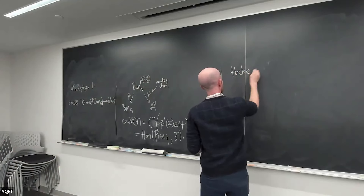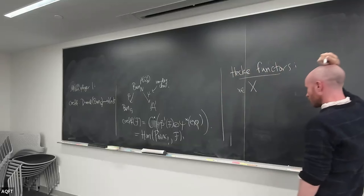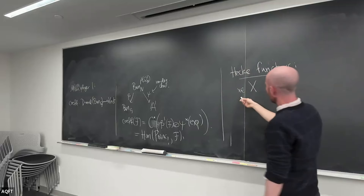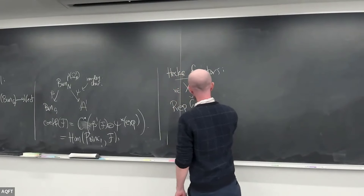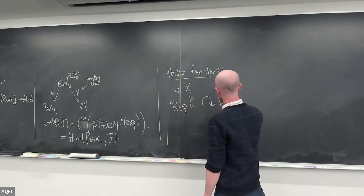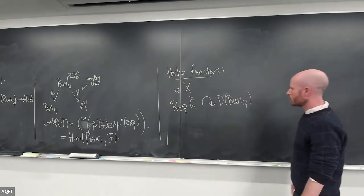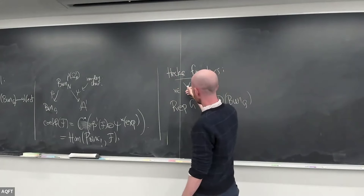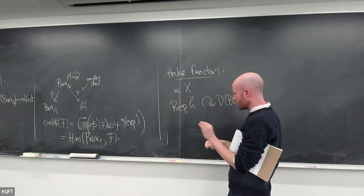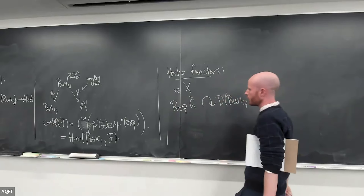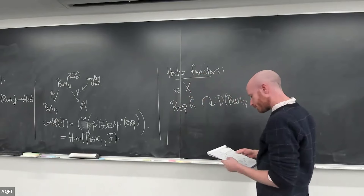Next, I briefly want to talk about Hecke functors. The nice thing is that whenever I have a point in my curve, there's an action coming from the geometric Satake theorem of representations of the Langlands dual group on this category of D-modules on Bun_G. If I take two points, I'll get an action of Rep(G-check)^2, and in fact I can take those two points to be the same point and I'll still get an action. That encodes the commutativity of the geometric Satake equivalence.